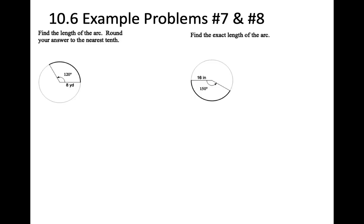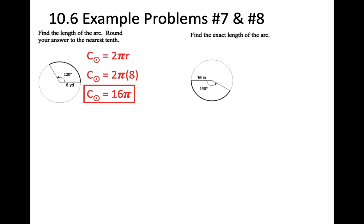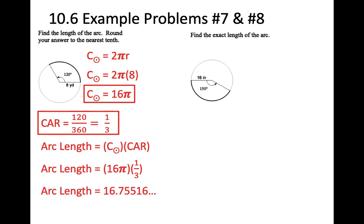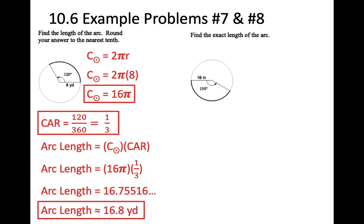For the first arc length problem, rounding to the nearest tenth: the circumference is 2π(8) equals 16π. The CAR is 120/360 equals 1/3. So the arc length equals 16π times 1/3, which equals approximately 16.8 yards.